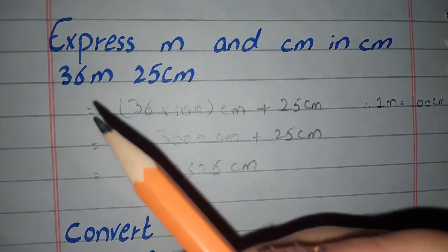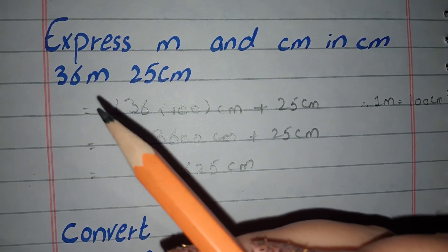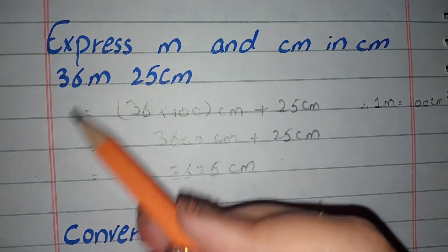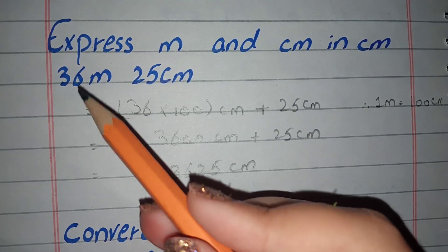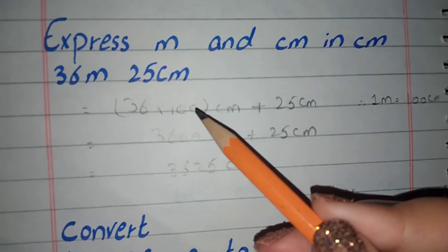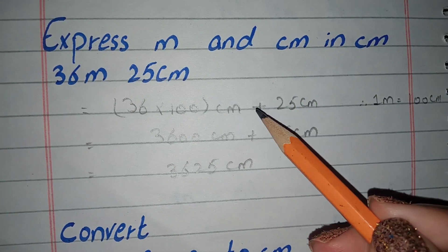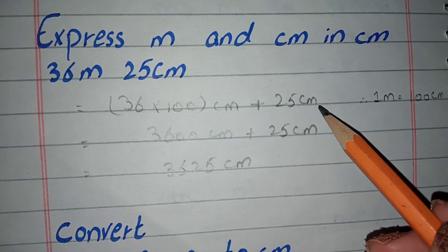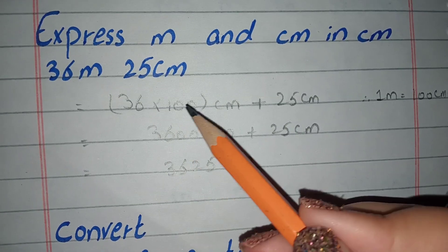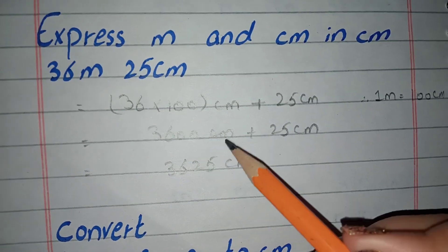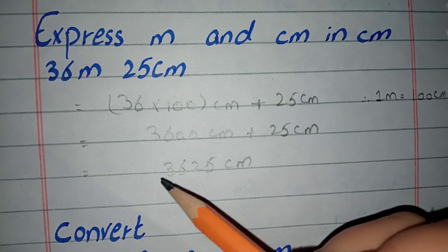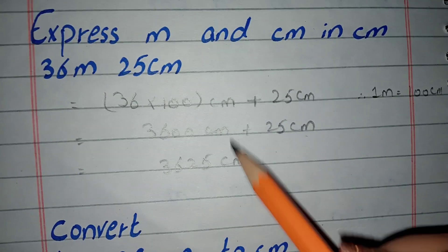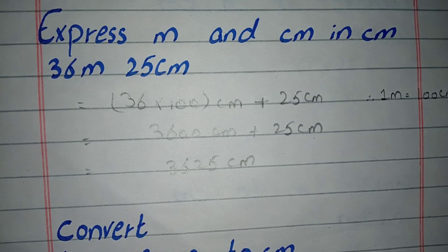The general method is: if you have meters and centimeters, you take the meter value, write it here and multiply it by 100, then write the centimeter value separately and add them together. Multiply the meters by 100, then combine both values in centimeters to get the final answer.